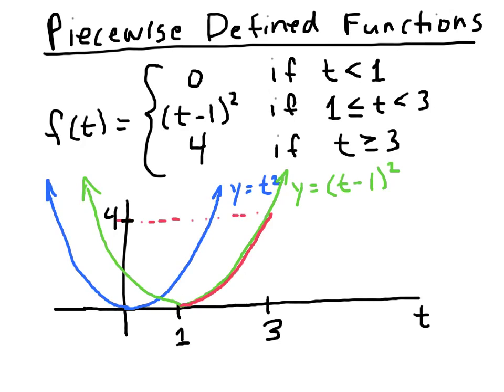After time 3, our function has the value 4. Right at t equals 3, the middle portion has value 4, so the value 4 carries on after that. And the value of the function is 0 up until time 1. The red indicates what the graph of our piecewise defined function looks like overall.